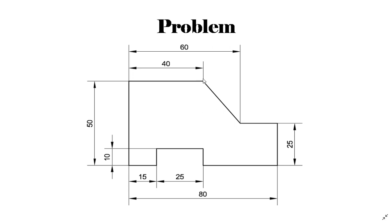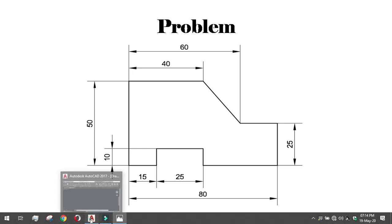We can approach this in two ways — starting from a given point using ortho mode, or using the closed loop function. For simplicity we can start from the left corner, or use the closed loop to complete the shape. We will demonstrate both methods. Let's start with the primary method and go to AutoCAD.